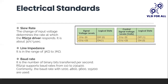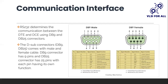The baud rate of the RS-232 communication protocol ranges from about 110 to 230,400. Commonly used baud rates are 1200, 4800, 9600, and so on. RS-232 determines communication between the DTE and DCE using two types of connectors: DB9 and DB25. The DB9 connector has 9 pins and the DB25 connector has 25 pins, each having their own functions as given in the list.